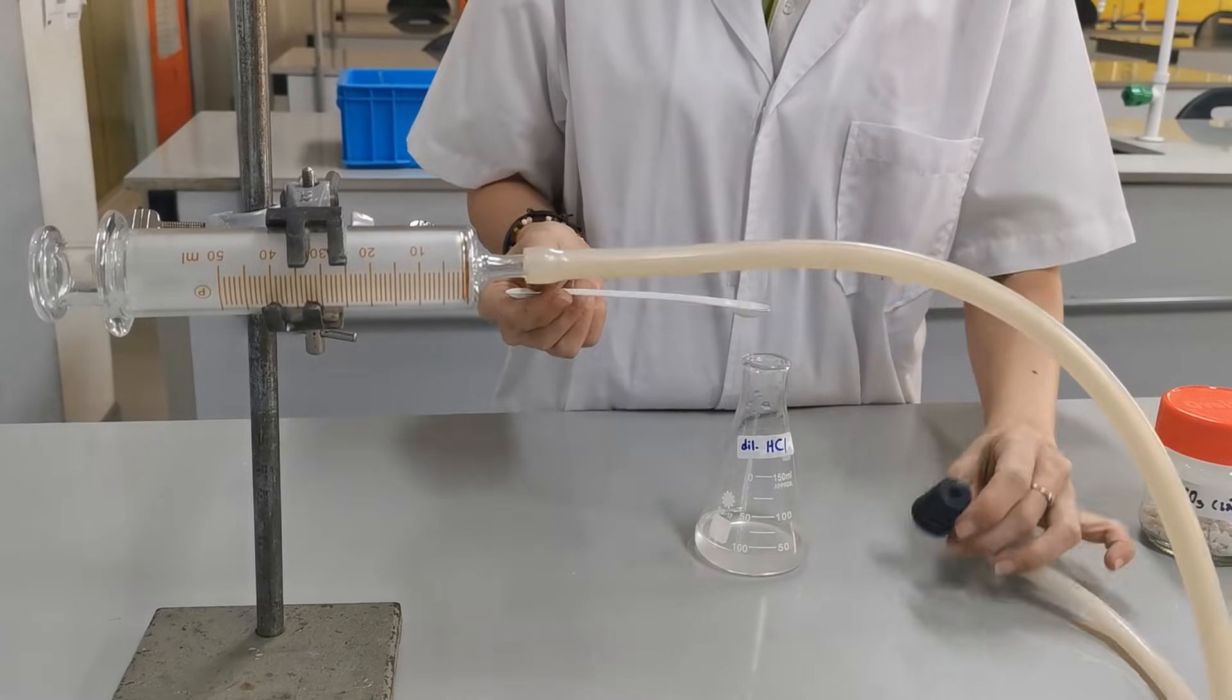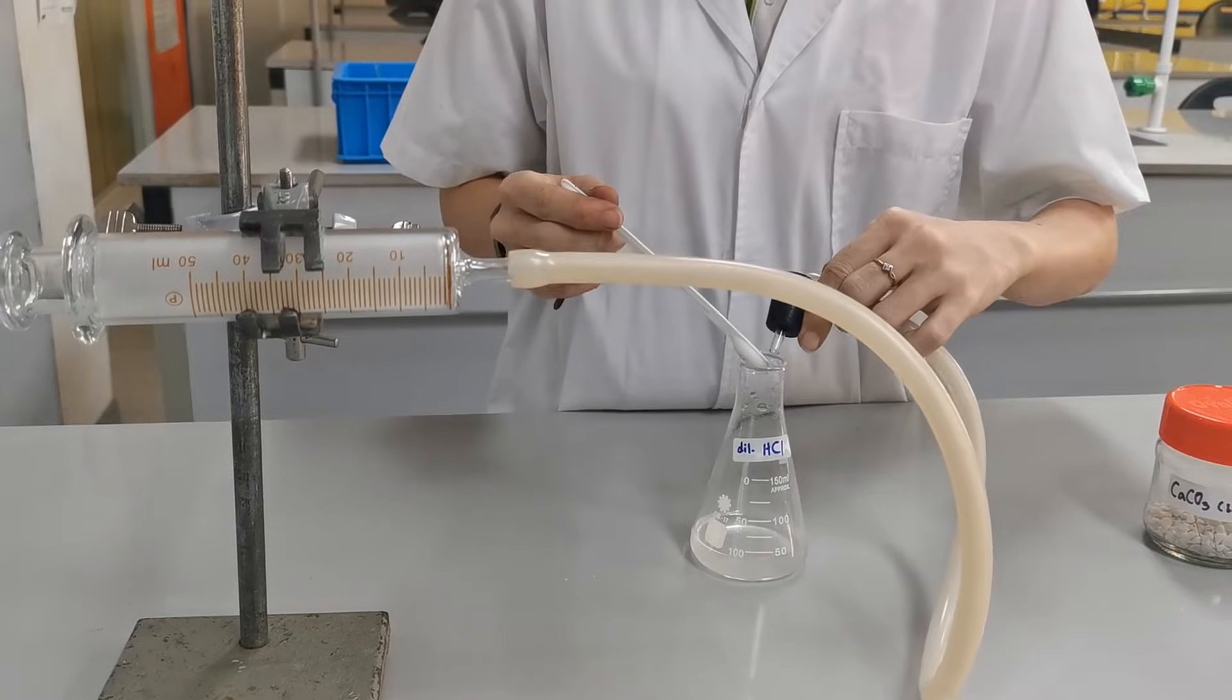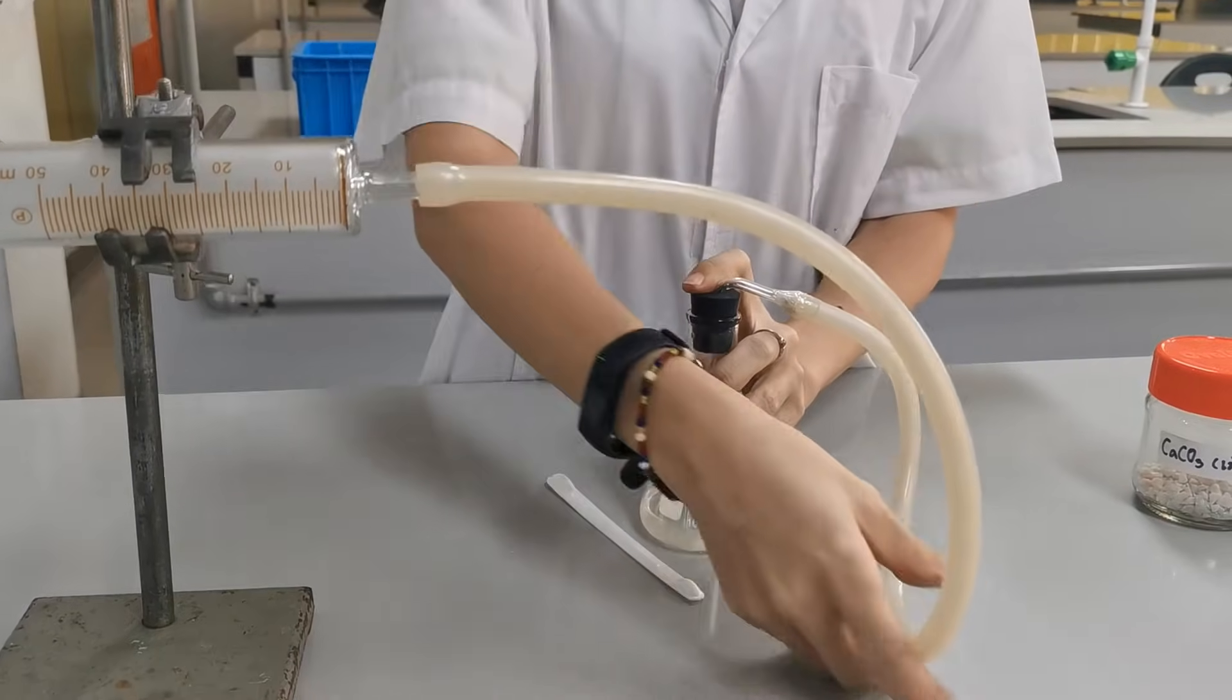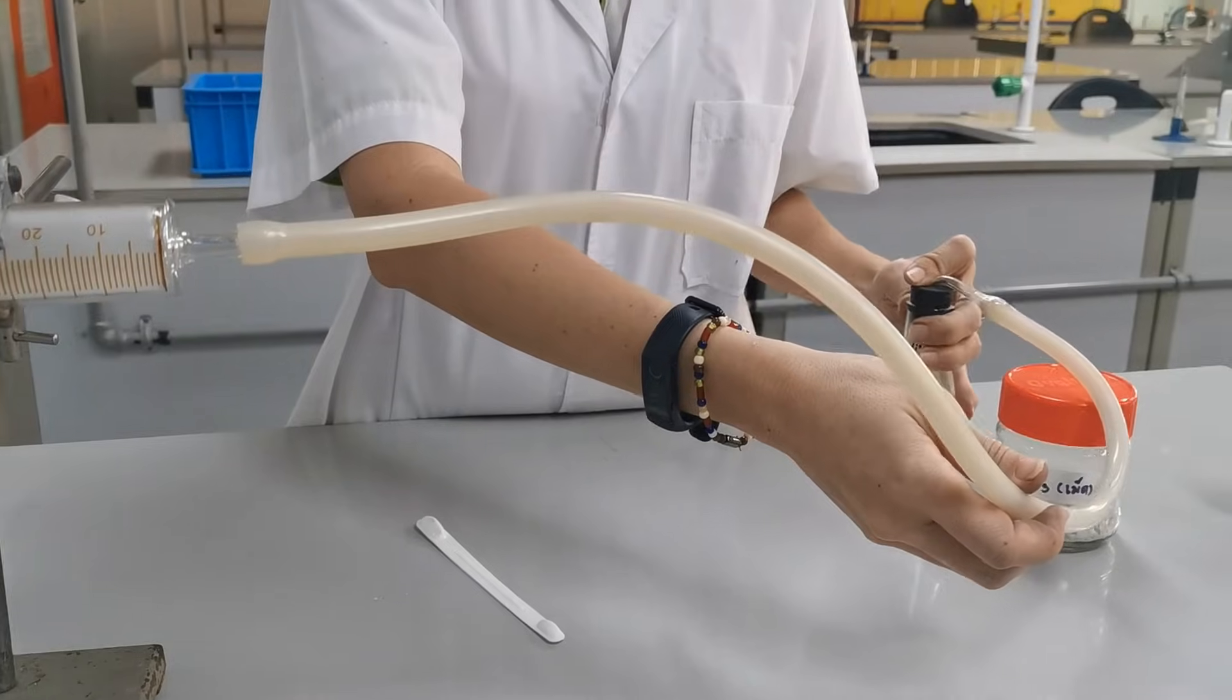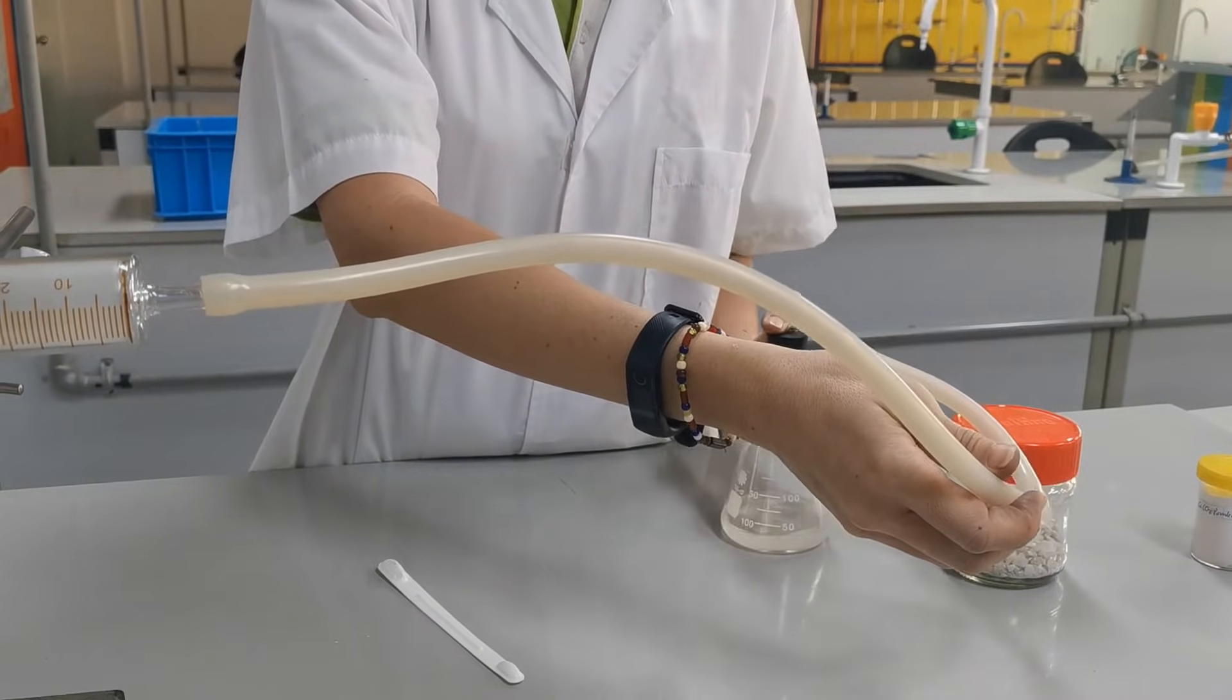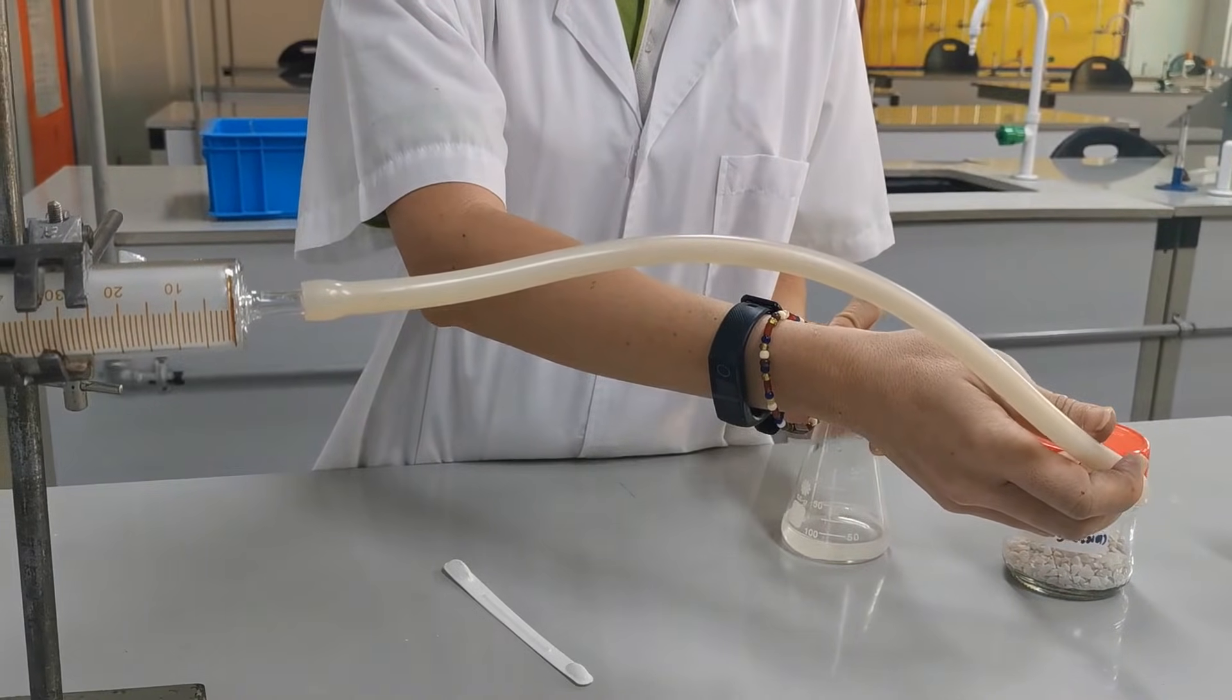After you drop the calcium carbonate, stopper the conical flask straight away. Remember the gas syringe should be positioned horizontally so that the plunger is not affected by gravity.